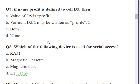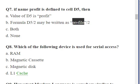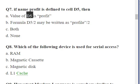Question number seven: 'If the name "profit" is defined for cell D5 in Excel, then' — four options are given: (a) the value of D5 is profit, (b) a formula like D5/2 may be written as profit/2, (c) both, and (d) none. Option (b) is the correct answer because once you define range names, you can use them in formulas in place of cell addresses. Option (a) is not valid because defining a range name does not assign a value to the cell.